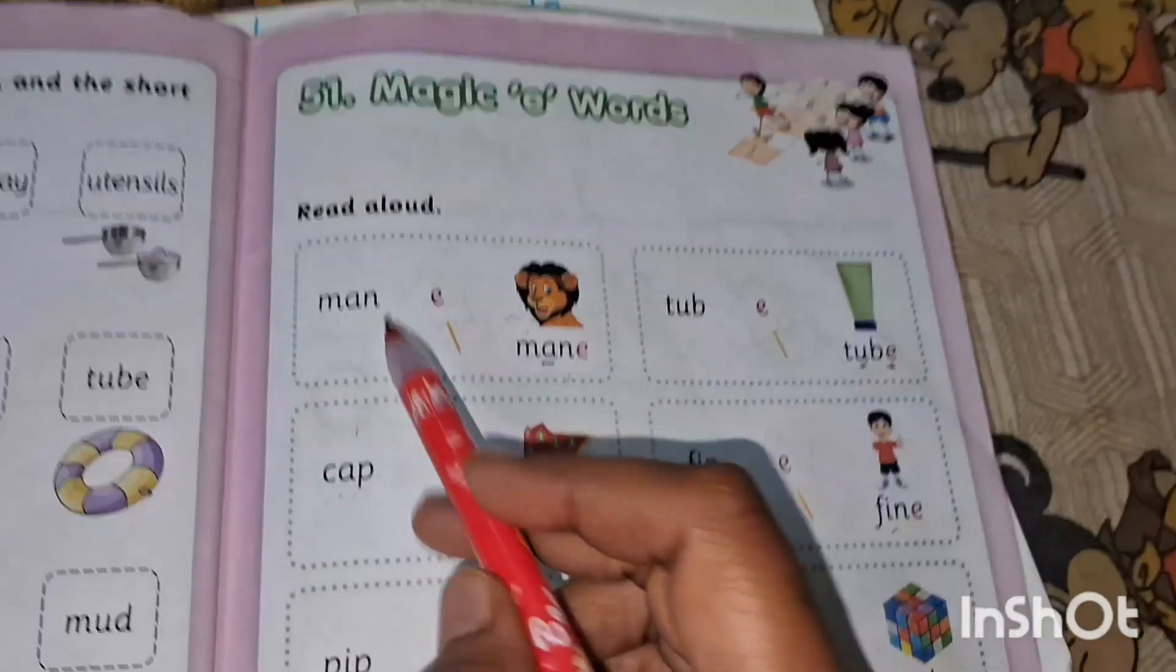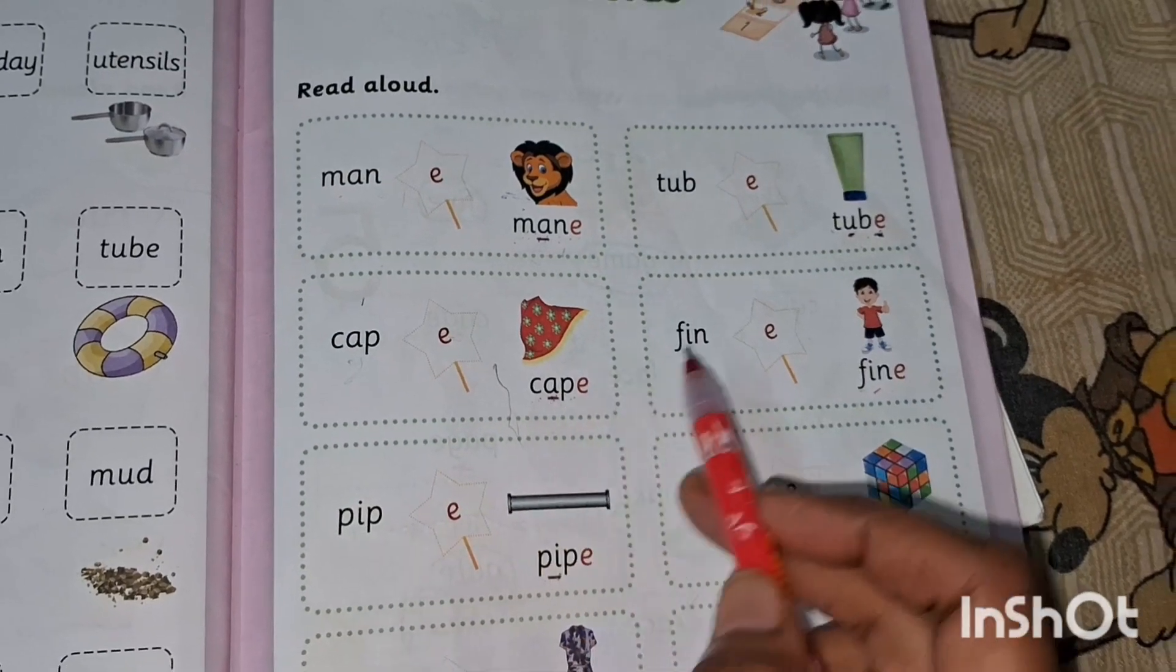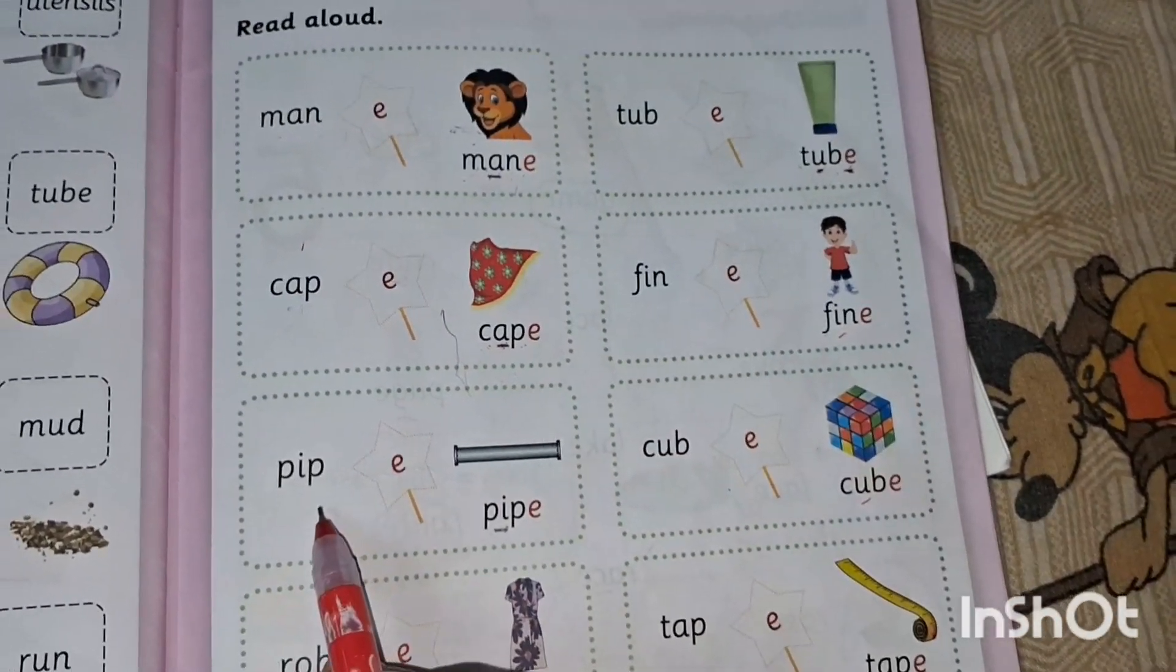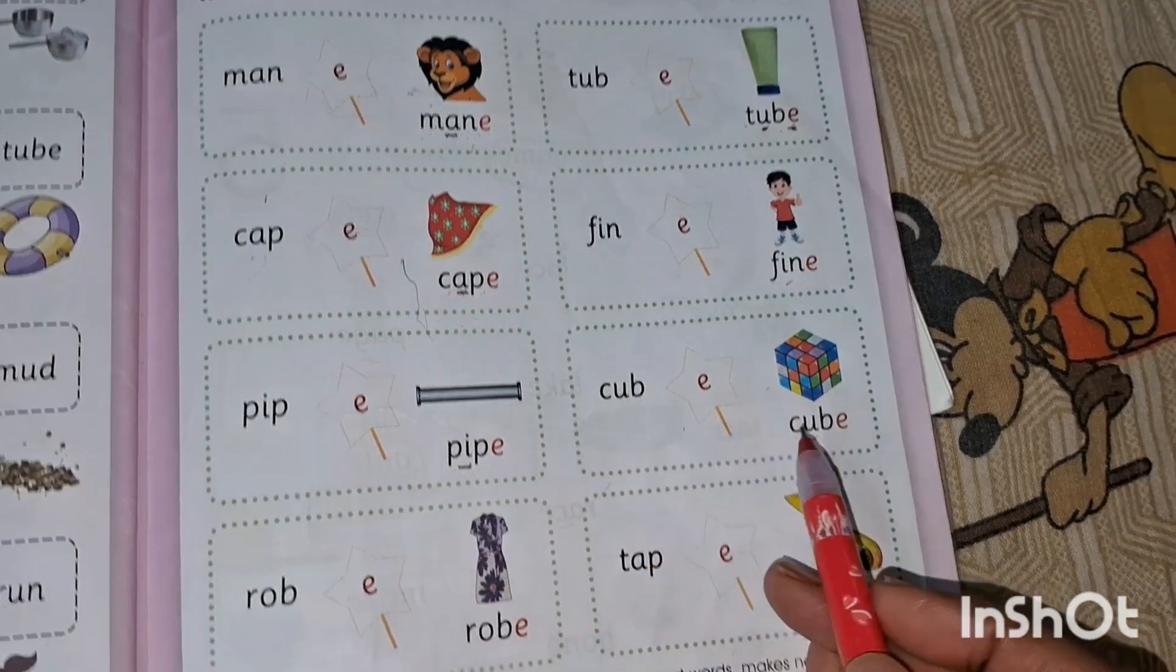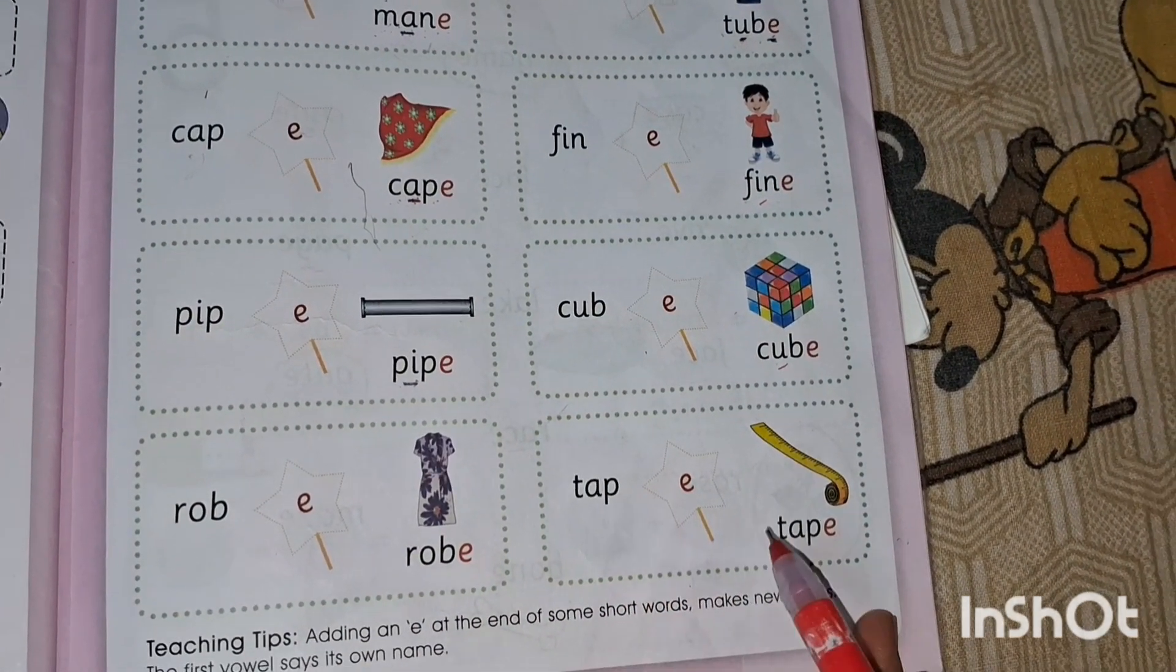Listen: man, mane; tub, tube; cap, cape; fin, fine; pip, pipe; cub, cube; rob, robe; tap, tape.